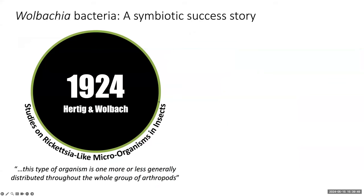Wolbachia was discovered exactly 100 years ago — we are at the century mark — by Dr. Hertig and Wolbach, a graduate student and professor pair at Harvard University. They were ripping open the abdomens of mosquitoes and a few other insect species and found these rod-shaped bacteria inside the ovaries. They looked like Rickettsia bacteria, so they called them Rickettsia-like. But later they were found to be distinct enough and were given the name Wolbachia because of the professor who helped discover the bacteria.